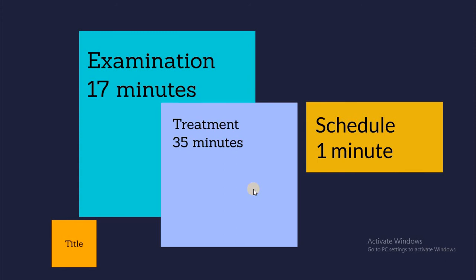The second step is the treatment, which should take 35 minutes. The treatment includes oral hygiene reinforcement, motivation and instruction, scaling and polishing, and chemical irrigation by mouthwashes. The third part, which should take one minute, is to schedule the next recall visit, schedule further periodontal treatment, and schedule or refer to restorative or prosthetic treatment.